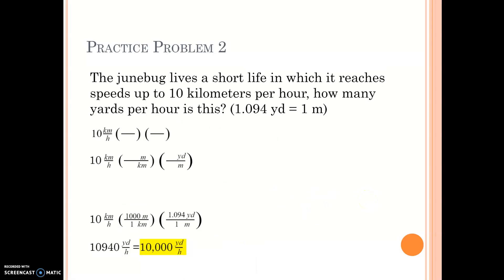Practice problem 2: The June bug lives a short life in which it reaches speeds of up to 10 kilometers per hour. How many yards per hour is this? The conversion factor for yards to meters is 1.094 yards equals 1 meter. There is no direct conversion from kilometers to yards, so I need to set up two parentheses. My starting value is 10 kilometers per hour, and I write down the given and set up the two parentheses.